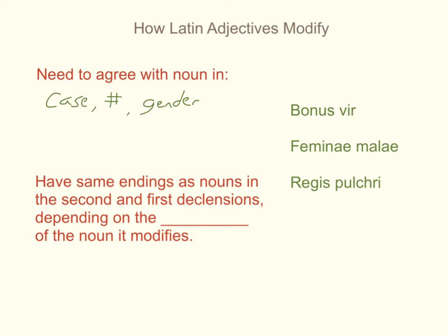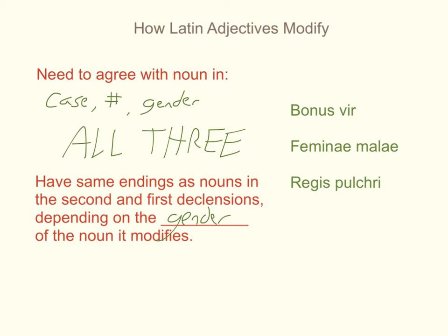If it agrees in case and number but not gender, it does not agree — it has to do all three. Adjectives have the same endings as nouns in the second and first declensions. The 2-1-2 adjectives you know right now work as follows: if it's a masculine noun you need to agree with, the adjective will be in the second declension; if it's feminine, it'll be in the first declension; if it's neuter, it'll be the second declension neuter.